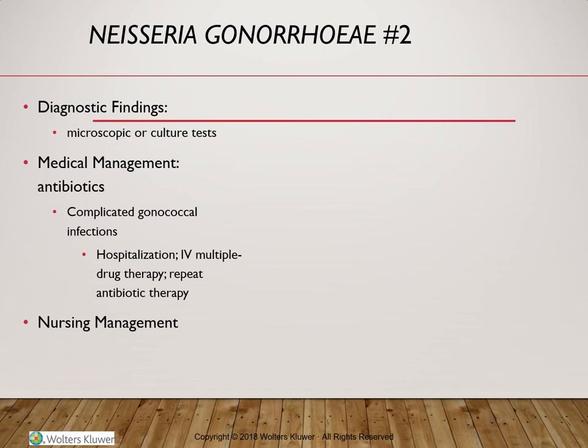If the microorganism disseminates throughout the entire body, the patient may manifest skin rashes, fever, and painful joints. Diagnosis is done by identifying the microorganism through microscopic examination or after a culture that was incubated. The medical management involves treatment with antibiotics. This bacterium is increasingly resistant to several classes of antibiotics, including penicillin, tetracyclines, fluoroquinolones, and sulfonamides.